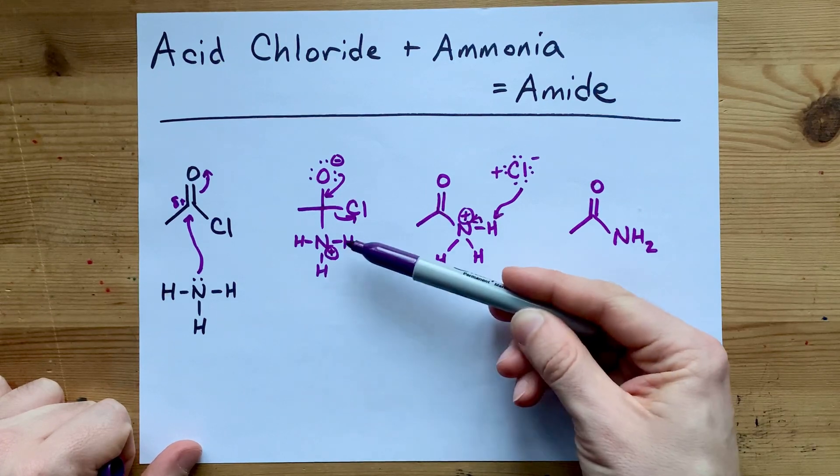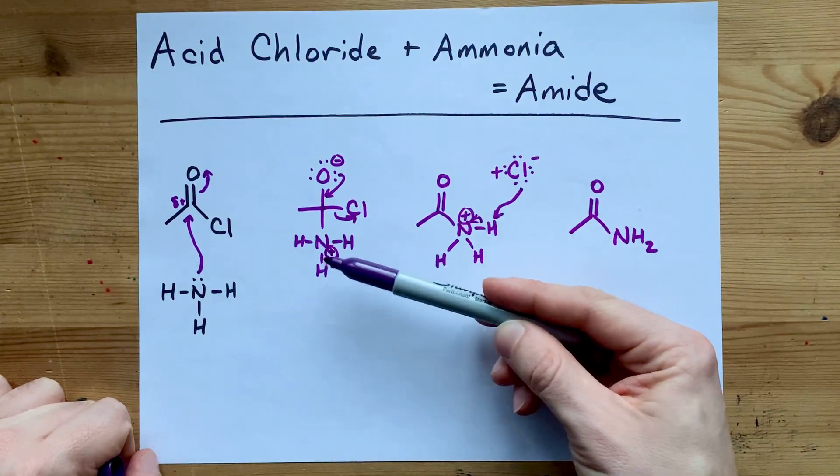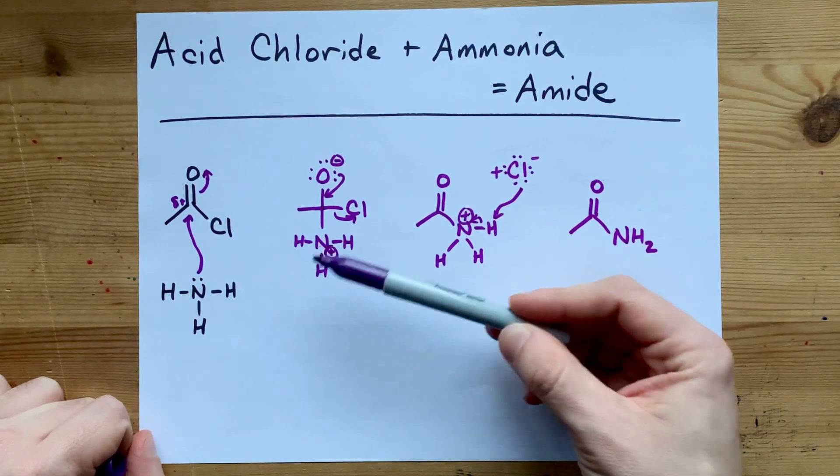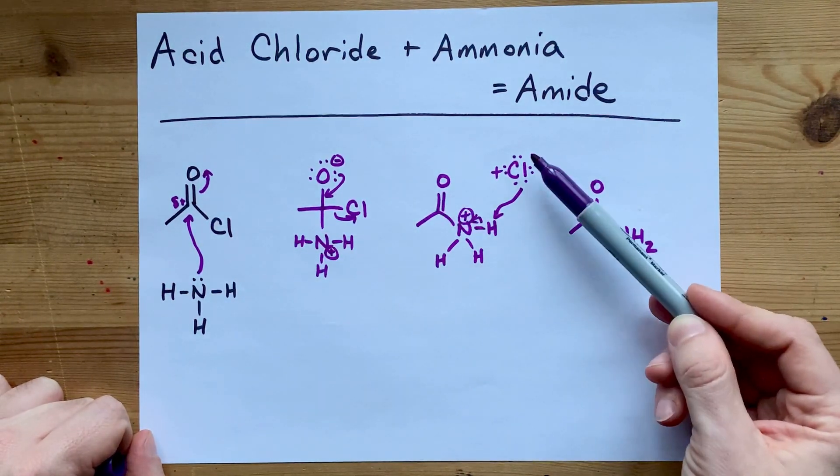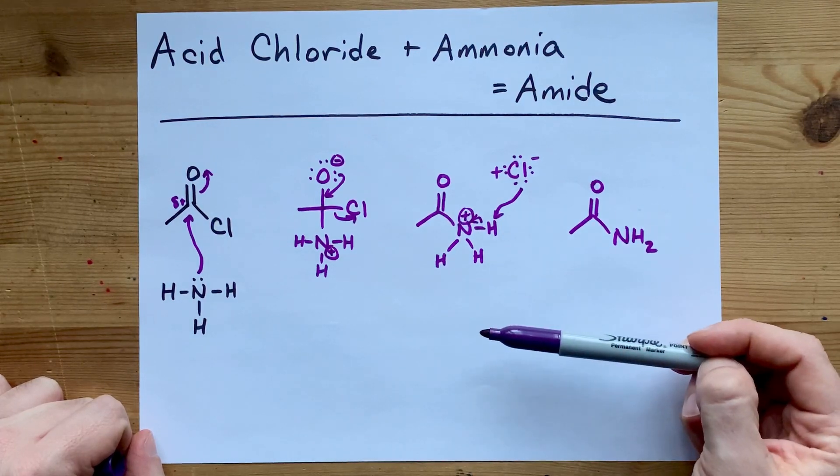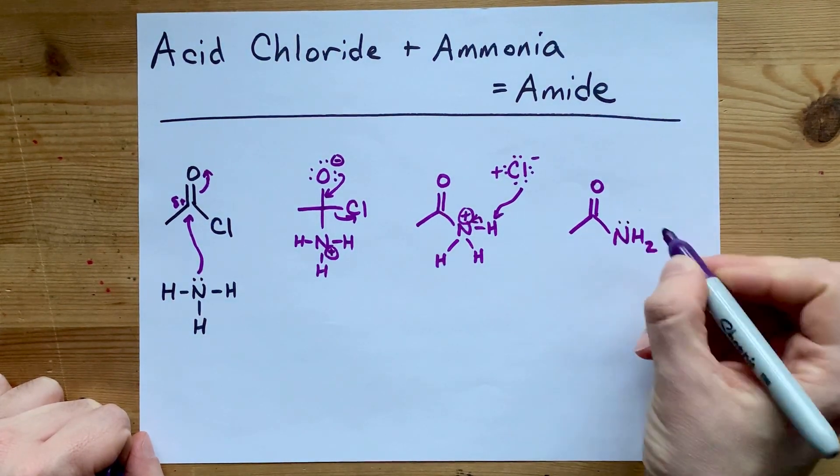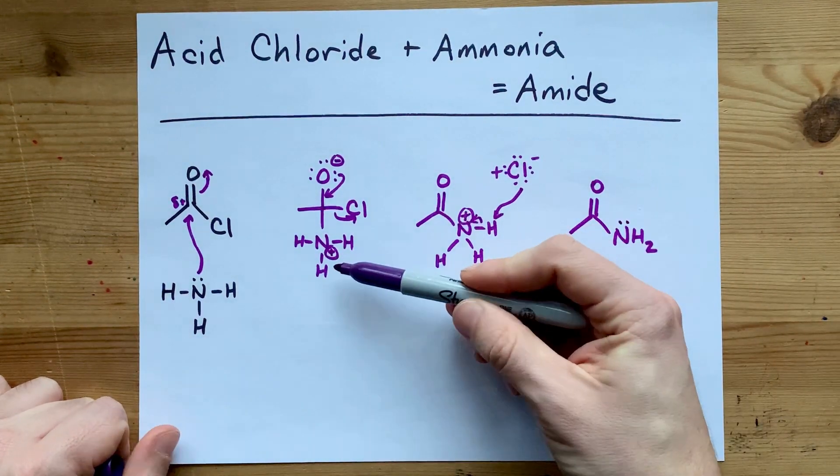This could have been, I don't know, dimethylamine. As long as you have one H, so that that H can be lost as the chloride swoops in to take it away to reform the lone pair on nitrogen. As long as it's not a tertiary amine, you're going to be able to make this reaction happen.